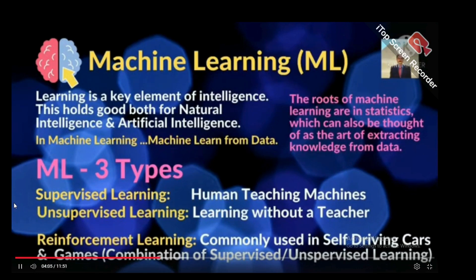What is Machine Learning? Learning is a key element of intelligence — this holds true for both natural intelligence and artificial intelligence. In machine learning, machines learn from data. The roots of machine learning are in statistics, which can be thought of as the art of extracting knowledge from data.